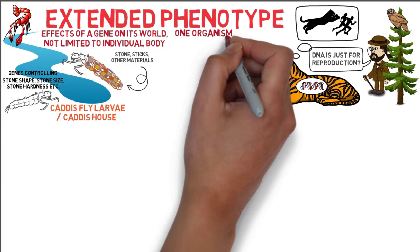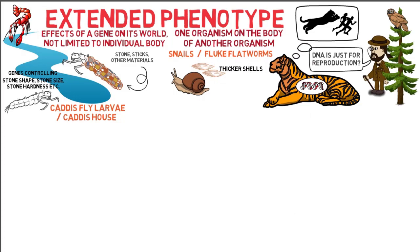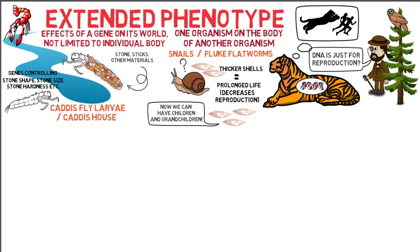Extended phenotype effects can also arise from the genes in one organism acting on the body of another organism. Shells of snails parasitized by fluke flatworms are extra thick and seem to benefit the snail by protecting it and prolonging its life. But why don't snails evolve to have thicker shells anyway, without the parasite? This is because snails that spend more resources on making thicker shells are penalized by devoting fewer resources to reproduction and therefore do not pass on the genes for making extra thick shells. Flukes do not stand to gain from the snail's reproduction, but gain from influencing the snail to protect itself and live longer. Hence the fluke's genes show extended phenotypic effects on other organisms.